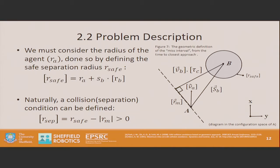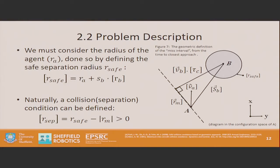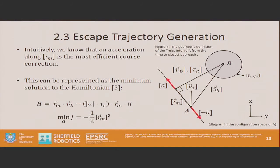From this, we can specify conditions for collision and conditions for separation — a bounded region in the separation space. For all values, if this is positive, we assume that collision can occur because the separation is larger than the miss vector; if negative, a collision is going to occur. Using this idea, we know intuitively that any avoidance action should act along the miss vector, because this vector represents the separation between the obstacle and the agent at the time of closest approach. Any acceleration should act to enlarge the vector rn. This can be represented mathematically as the minimum solution to the Hamiltonian, where the acceleration vector aligns with rn and reduces it to the minimum solution, representing the bounded region in the minimum and maximum acceleration.